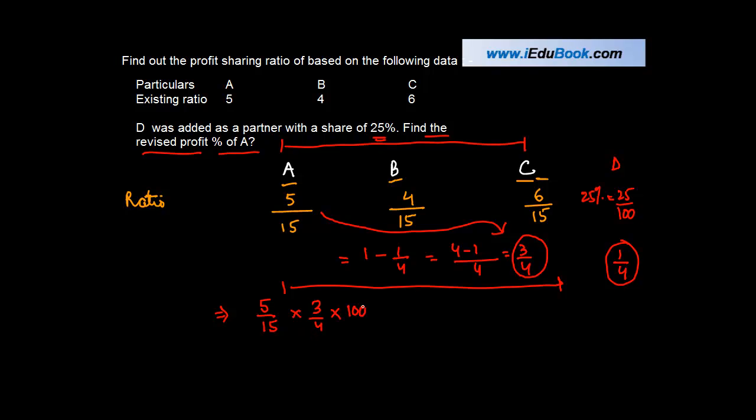To convert into percentage you will just multiply it by 100. So 5 goes into 15 three times, 4 goes into 100 twenty-five times. So we will get how much? 25 percentage.